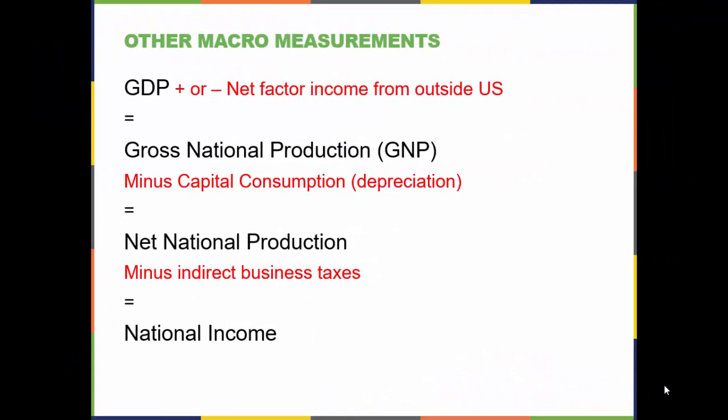There are three additional measurements useful when discussing macroeconomic issues. Gross national product represents all products and services produced by a country and its citizens throughout the world, not just domestically. If depreciation related to capital goods is subtracted from gross national product, we arrive at a figure called net national production. If indirect business taxes are then subtracted, we arrive at a figure called national income. This continues for a few more steps until we arrive at a figure more on the micro level — disposable income — which is what the individual citizen has as income to spend or save.